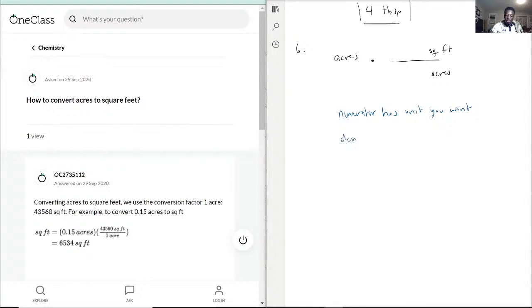And denominator has unit you have. This is the golden rule for most, if not all, chemistry questions: keep track of your units and make sure you're doing things the right way, not multiplying when you should be dividing.